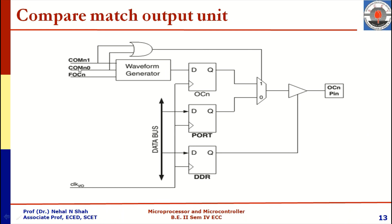We can also observe that when both bits of COM are 0, meaning the timer is functioning in normal mode, the multiplexer will have a 0 value, so whatever data is available on the port will be transferred to the buffer. But whenever the COM bits are set for CTC mode — that is, any one bit is 1 — the mux is activated and the waveform generator signal is transferred to the OC pin.